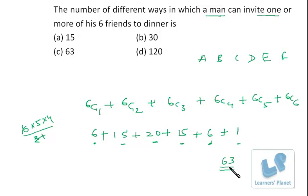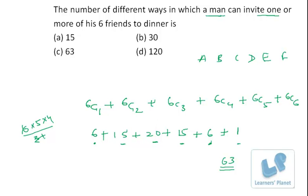So there are 63 ways in which he can invite one or more of his friends — one friend, two friends, three friends, four friends, five friends, or six friends. Note that here we are using combinations, not permutations, because since he is inviting friends, the order doesn't matter — whether A comes first or B comes first doesn't change who was invited. So we are simply making selections.